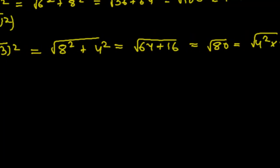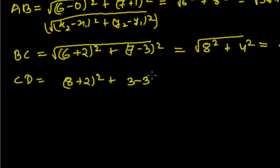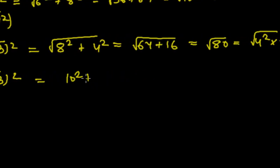Now let's find CD. Difference of x-coordinates: 8 - (-2) = 10, squared, plus difference of y-coordinates: 3 - 3 = 0, squared. So √(10² + 0) = √100 = 10 units. We get CD = 10 units.